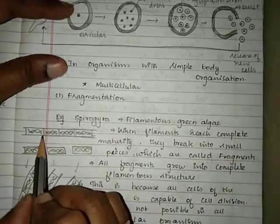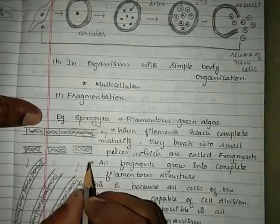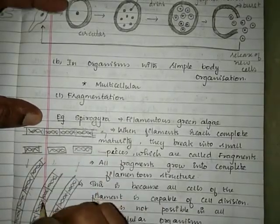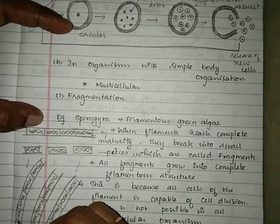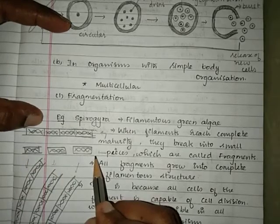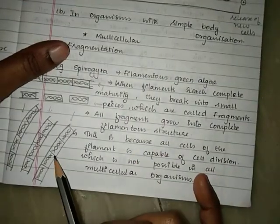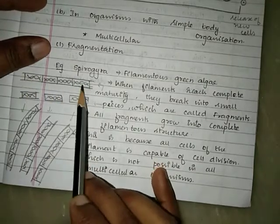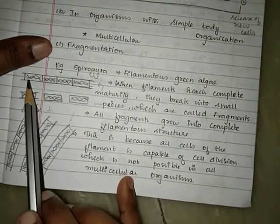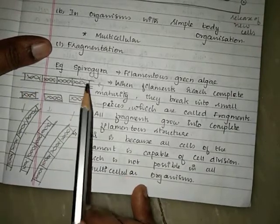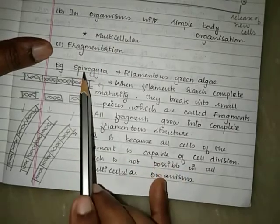Each fragment of Spirogyra can completely grow into a complete filament. Since every cell in the multicellular filament has the property of cell division, each fragment can grow into a complete filamentous green alga. However, fragmentation is not possible in all multicellular organisms — it is possible only in those with simple body organization where all cells can undergo cell division. This is fragmentation seen in Spirogyra.